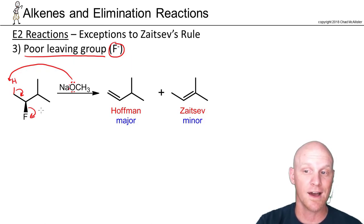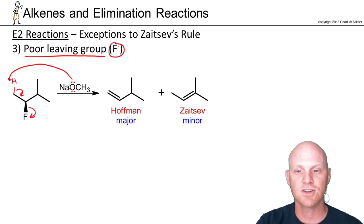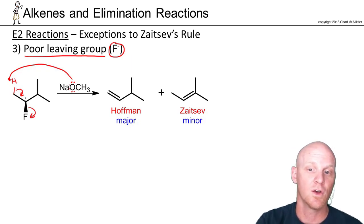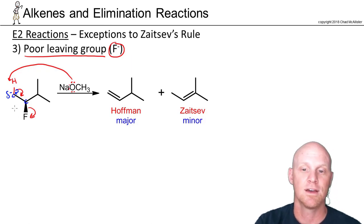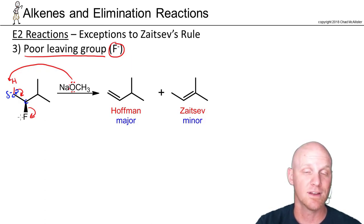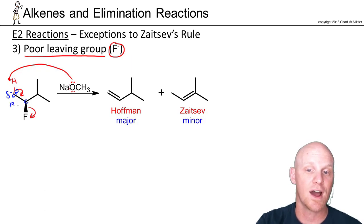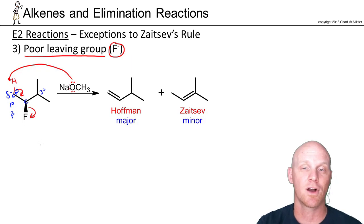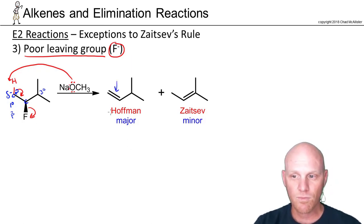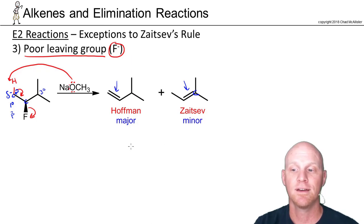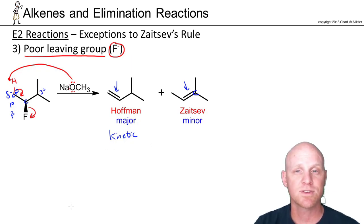Because fluorine hesitates to leave, the electrons have trouble dumping into the pi bond without violating the carbon's octet. In the transition state there's a buildup of negative charge on that carbon — it's carbanion-like. Carbanion stability is the exact opposite of carbocation stability, so it's preferred on a primary beta carbon rather than a tertiary one. That's why we get the Hoffman product: the carbanion-like structure sits on a primary carbon. It's a kinetic product with lower activation energy. This is the least common of the four exceptions.